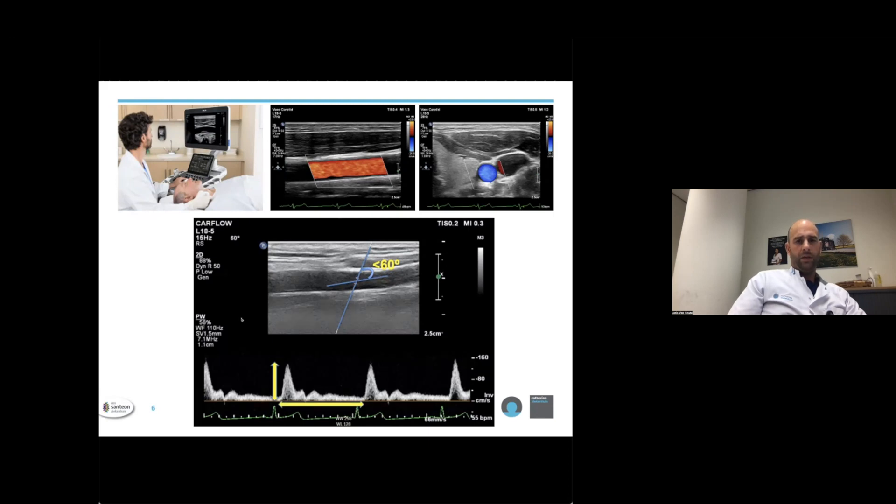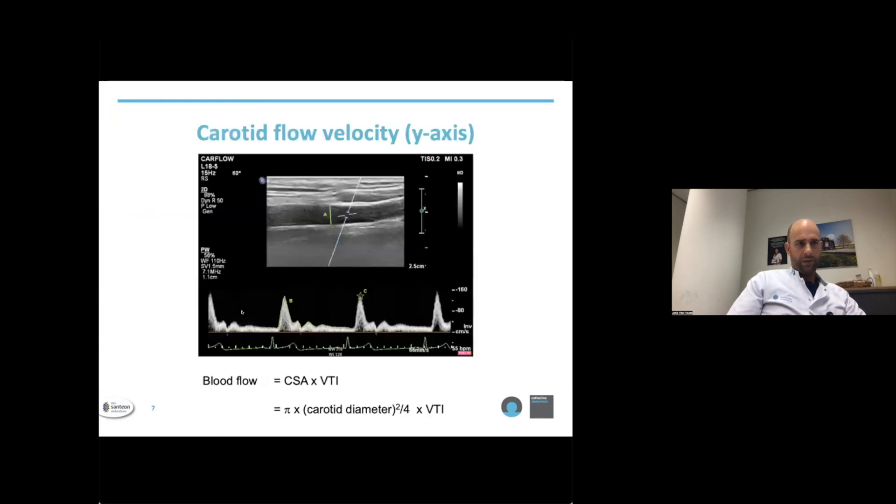Looking at the y-axis, blood flow velocities can be measured as a maximum velocity, as marked by C in this picture, or the velocity time integral, as marked by B. From the carotid artery diameter, the cross-sectional area can be calculated, which, multiplied by the carotid velocity time integral, gives us the unilateral carotid blood flow.